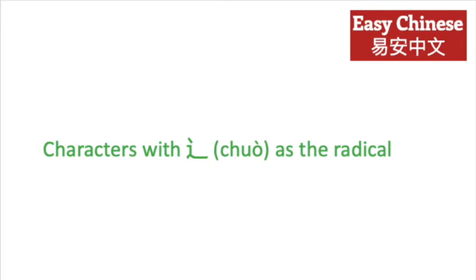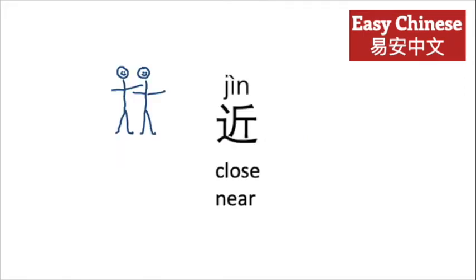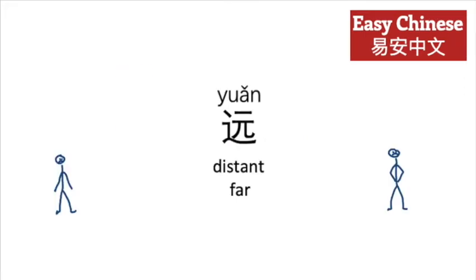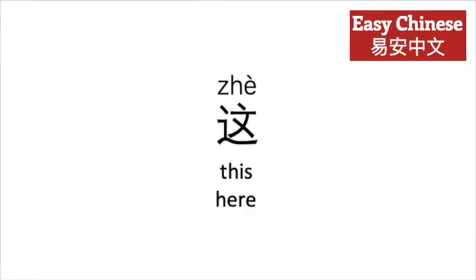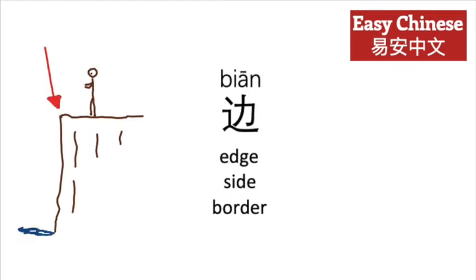Characters with chuo as the radical include: jin, meaning close or near; yuan, meaning distant or far; qi, meaning this or here, sometimes pronounced j; and bien, meaning edge, side, or border.